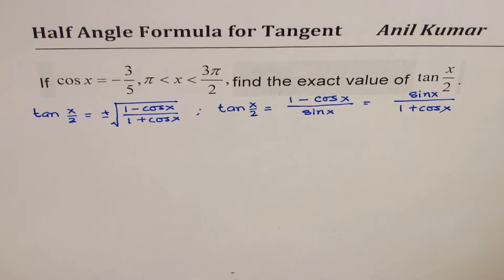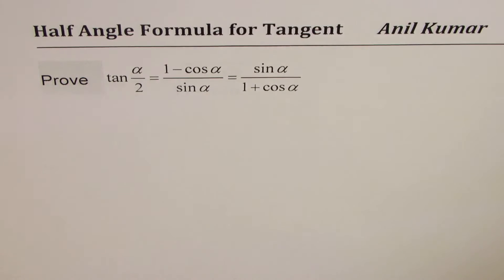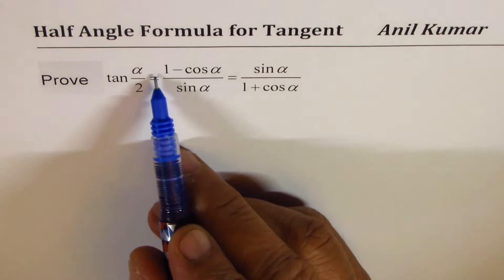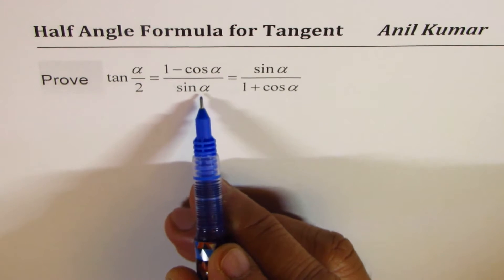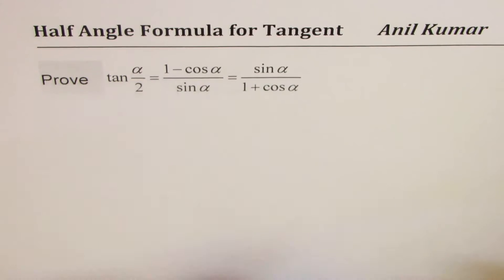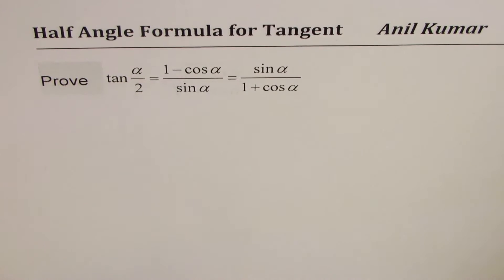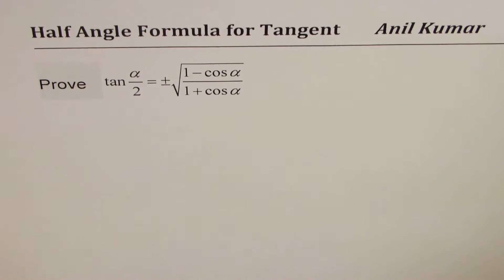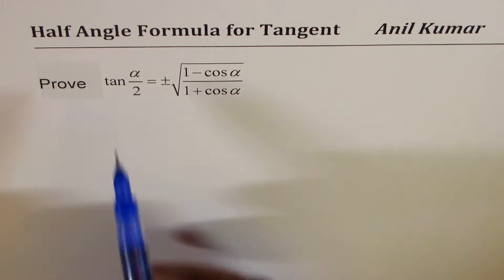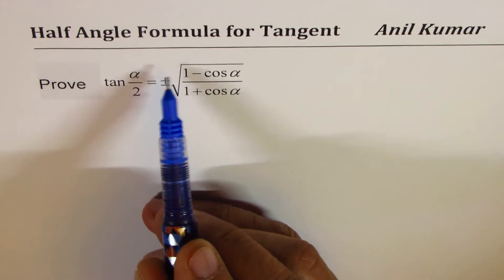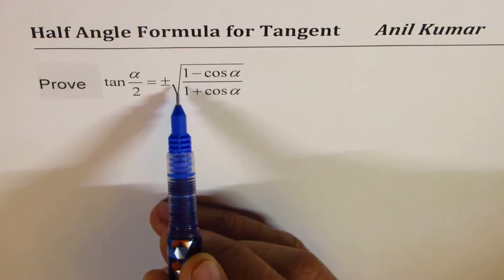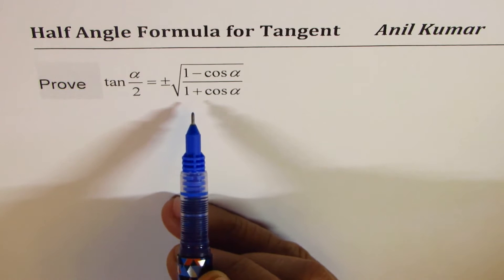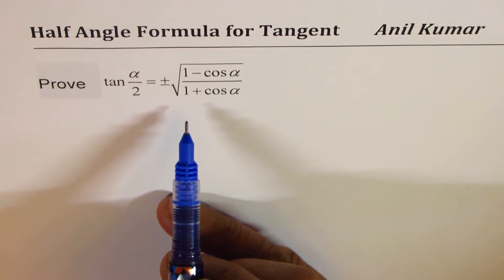Now I will do the derivations. Here we have tan alpha by 2 equals 1 minus cos alpha over sin alpha, which is also equal to sin alpha over 1 plus cos alpha. We will begin with the basic formula: tan alpha by 2 as plus or minus square root of 1 minus cos alpha divided by 1 plus cos alpha. That is a standard formula which is normally used.